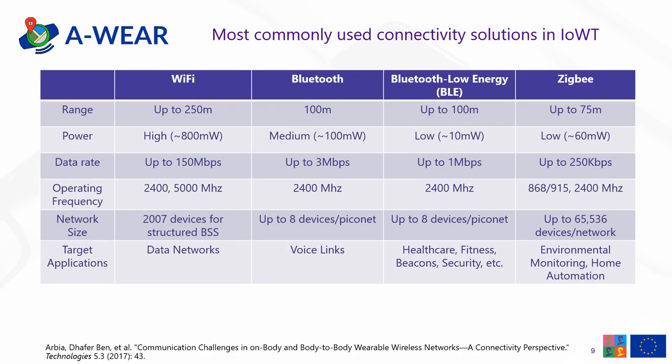Here in this table, we compare some of the most commonly used connectivity solutions in the internet of wearable things: Wi-Fi versus conventional Bluetooth versus Bluetooth low-energy versus ZigBee. We can see that Wi-Fi can offer the highest range of up to 250 meters as compared to other technologies. However, it also consumes very high power, whereas Bluetooth low-energy offers the least power consumption of around 10 milliwatts. Looking at data rate, Wi-Fi can support the highest data rate, whereas ZigBee has the lowest at only 250 kilobits per second.